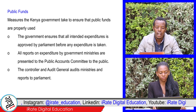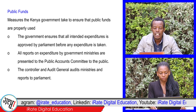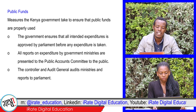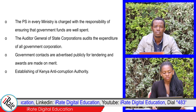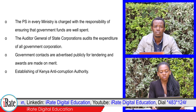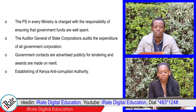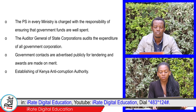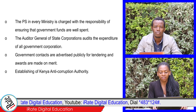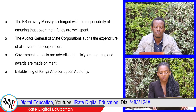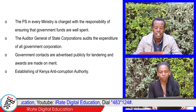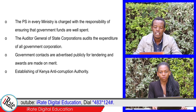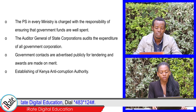The Controller and Auditor General audits all ministries and reports to parliament. The PS in every ministry is charged with the responsibility of ensuring that government funds are well spent. The Auditor General of state corporations audits the expenditure of all government corporations.